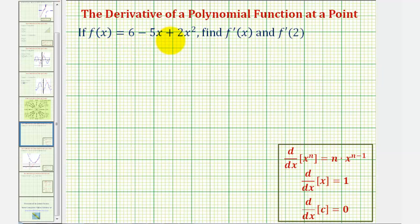If f of x equals 6 minus 5x plus 2x squared, we want to find f prime of x and f prime of 2. So to find the derivative function, we'll apply the derivative rules given here below.